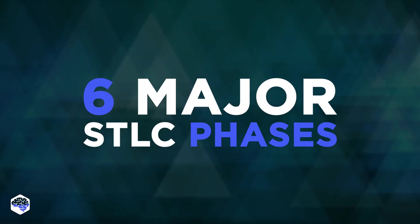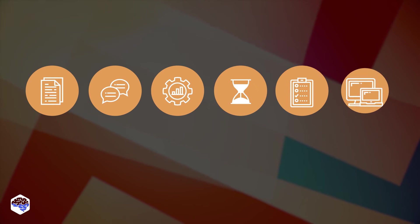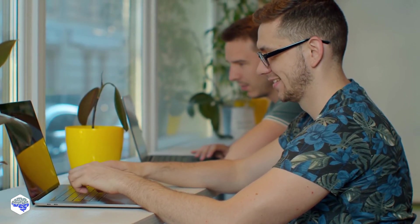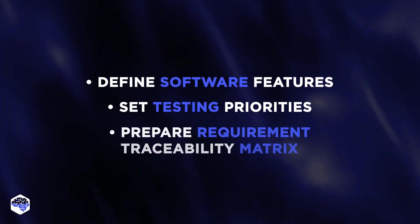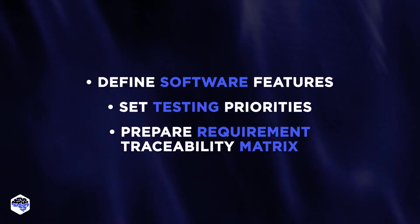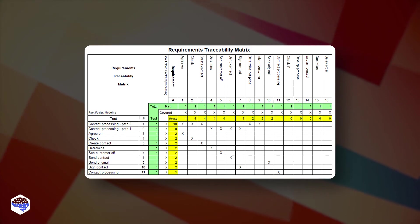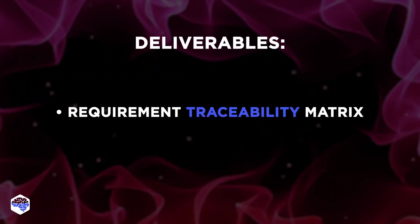Let's now review the process of the Software Testing Life Cycle. Phase 1: Requirements Analysis. After product requirements are set out, the Jelvix testing teams evaluate this information and ensure that it works for the project. Requirement analysis includes defining software features, setting testing priorities, and preparing a Requirement Traceability Matrix (RTM), which is used to track the requirements and check if the current project requirements are met. We also perform identifying the testing environment details. The deliverable of this stage is the Requirement Traceability Matrix.